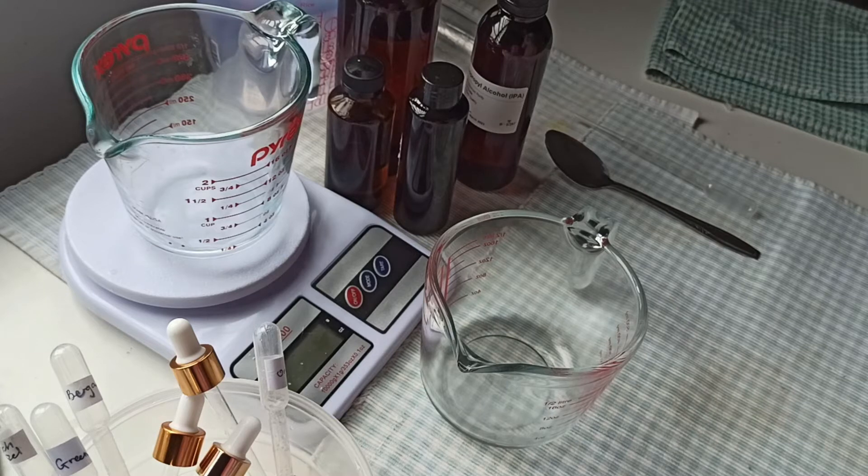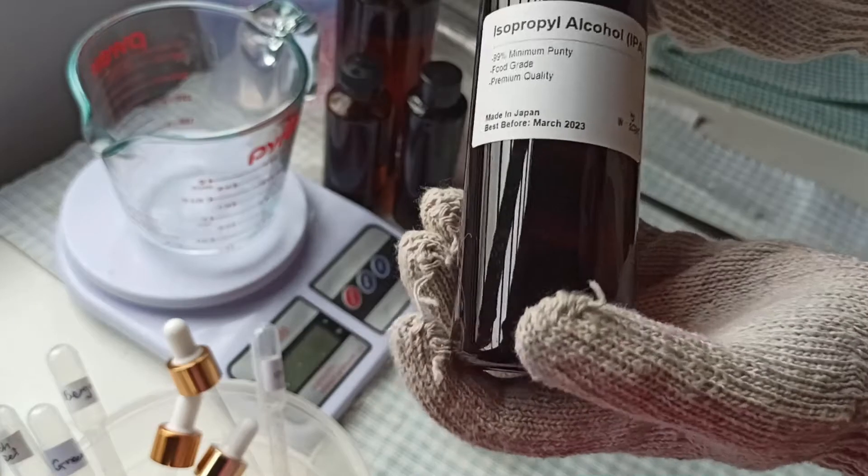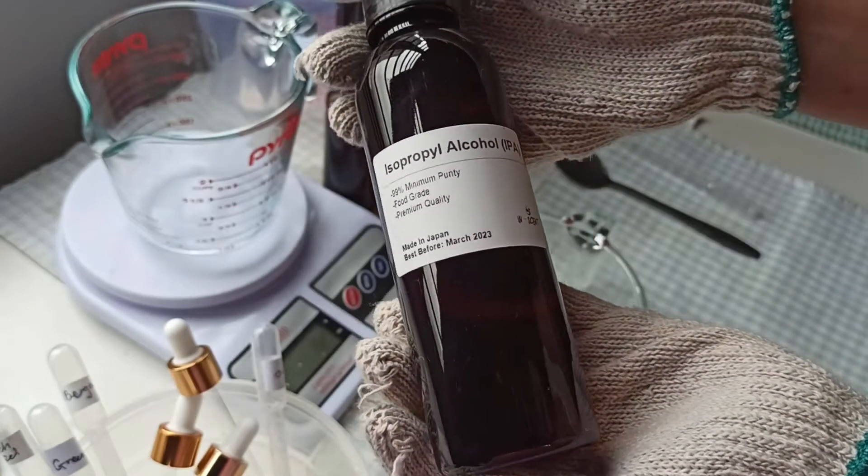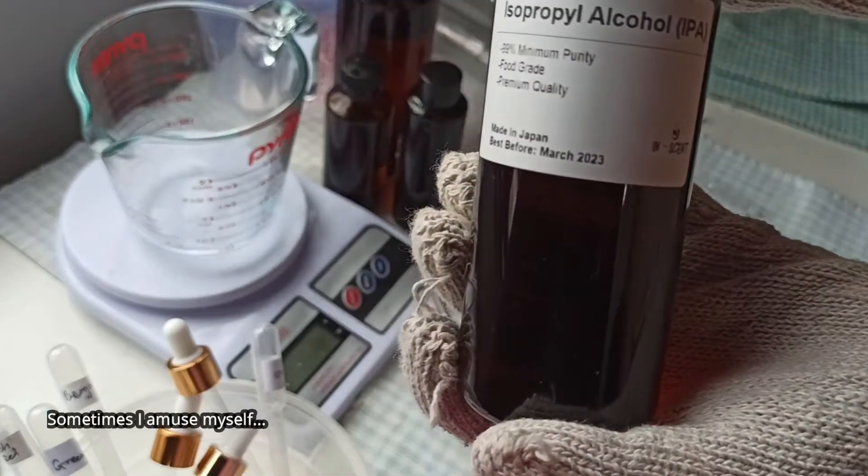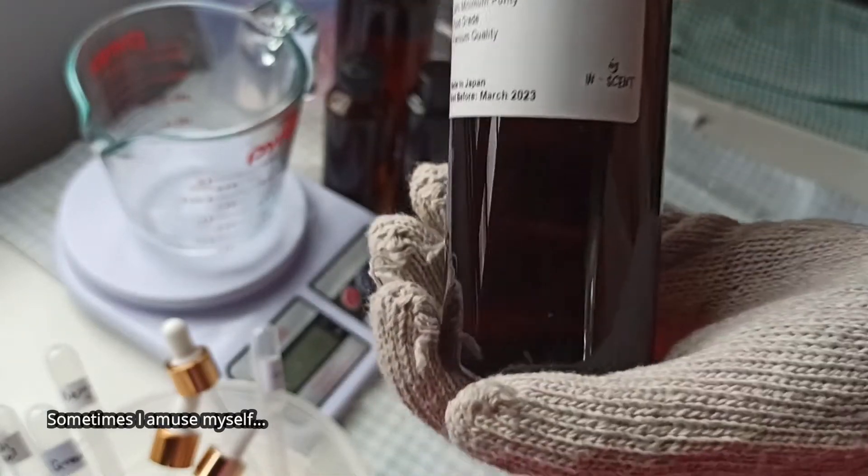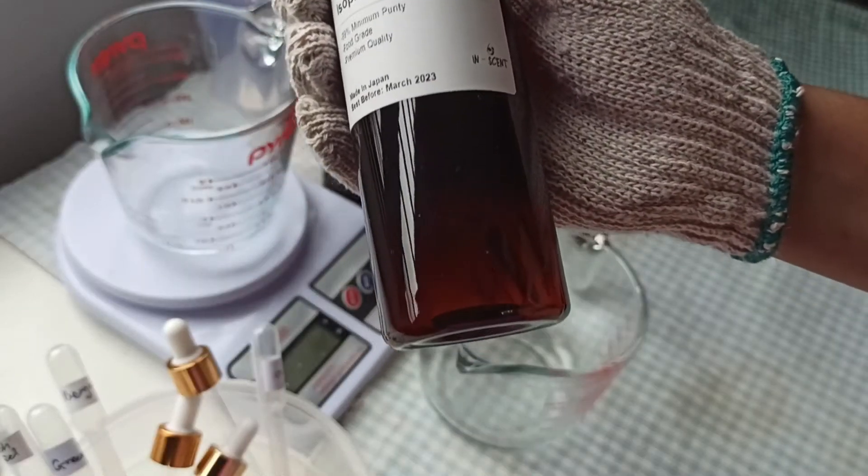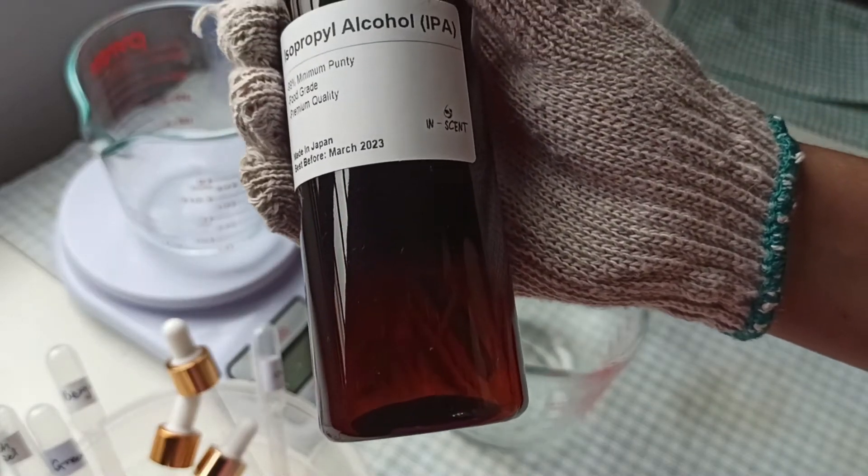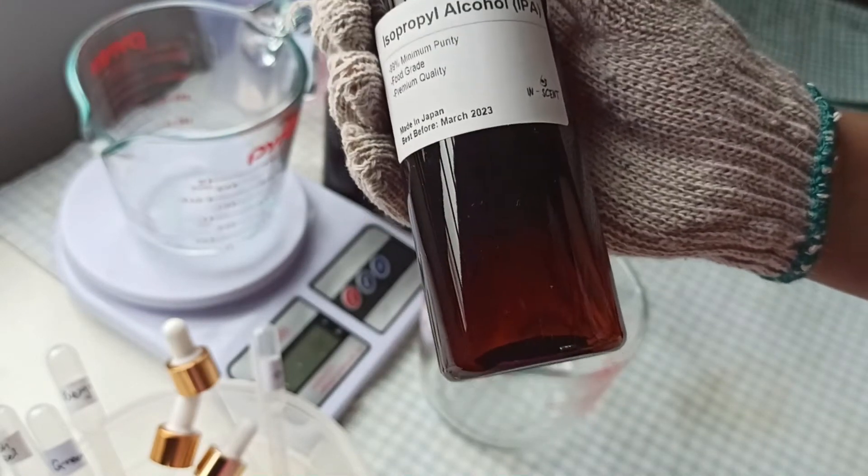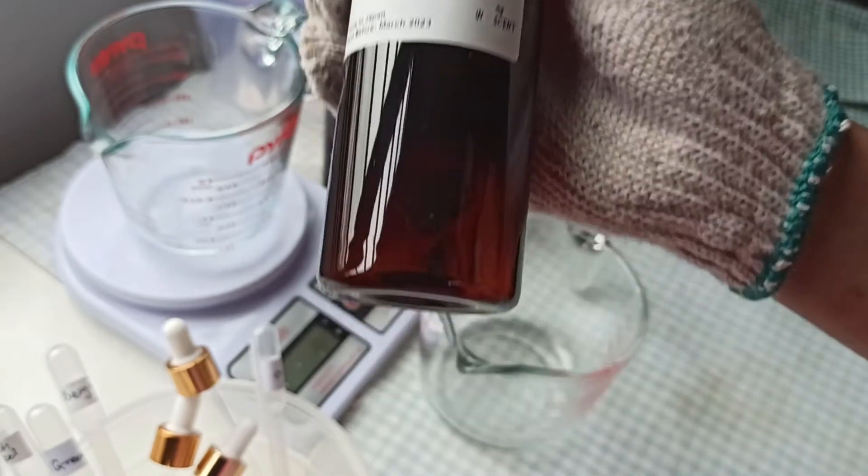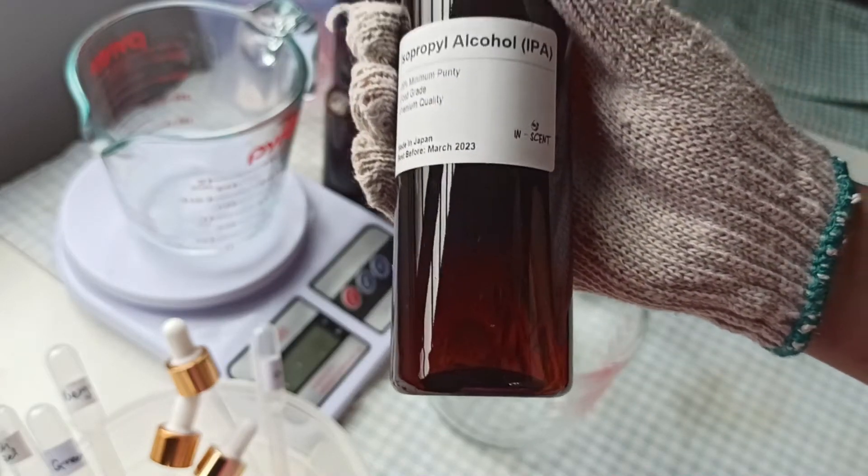So, let's get started. We first need 150ml of isopropyl alcohol. This alcohol has a concentration of 99%. So, it will make your whole hand sanitizer 75% in concentration. If you use an alcohol that is less than 99% in concentration, your hand sanitizer will be less than 75% in concentration.